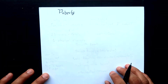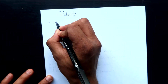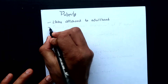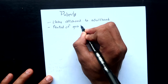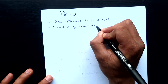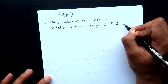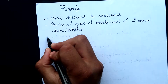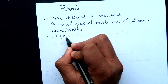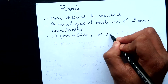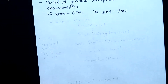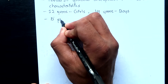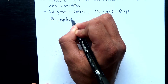Puberty in girls is the period which links childhood to adulthood. It is the period of gradual development of secondary sexual characteristics. This occurs at the age of 12 years in girls and 14 years in boys. As described by Tanner and Marshall, five important physical changes are evident during puberty.